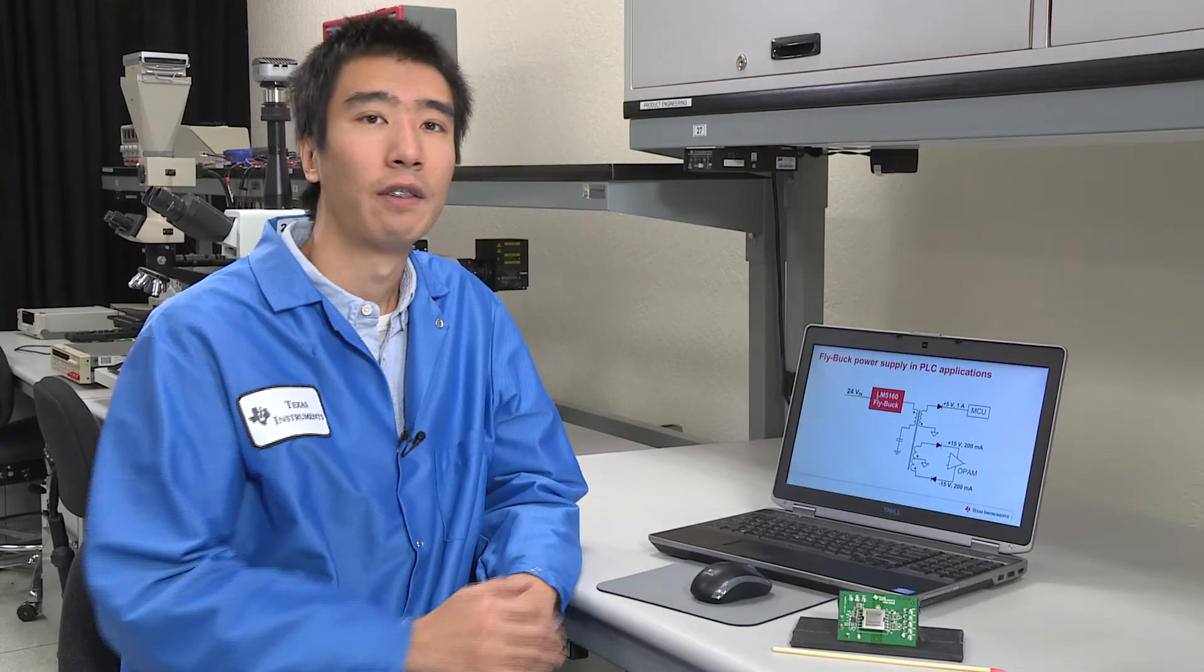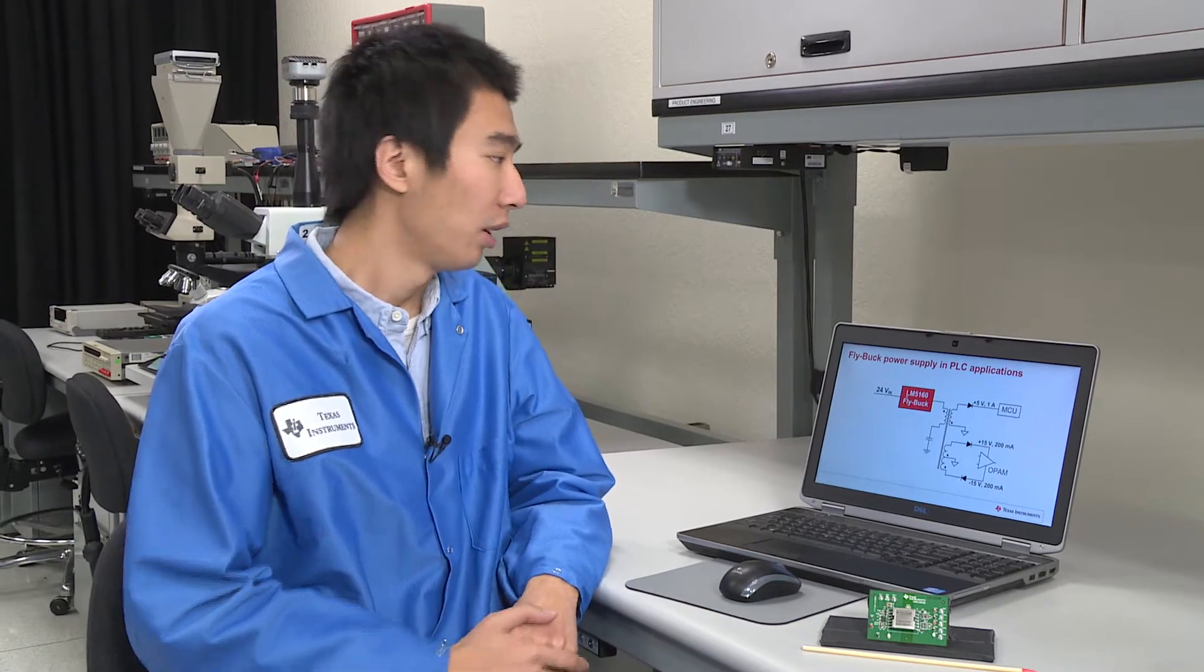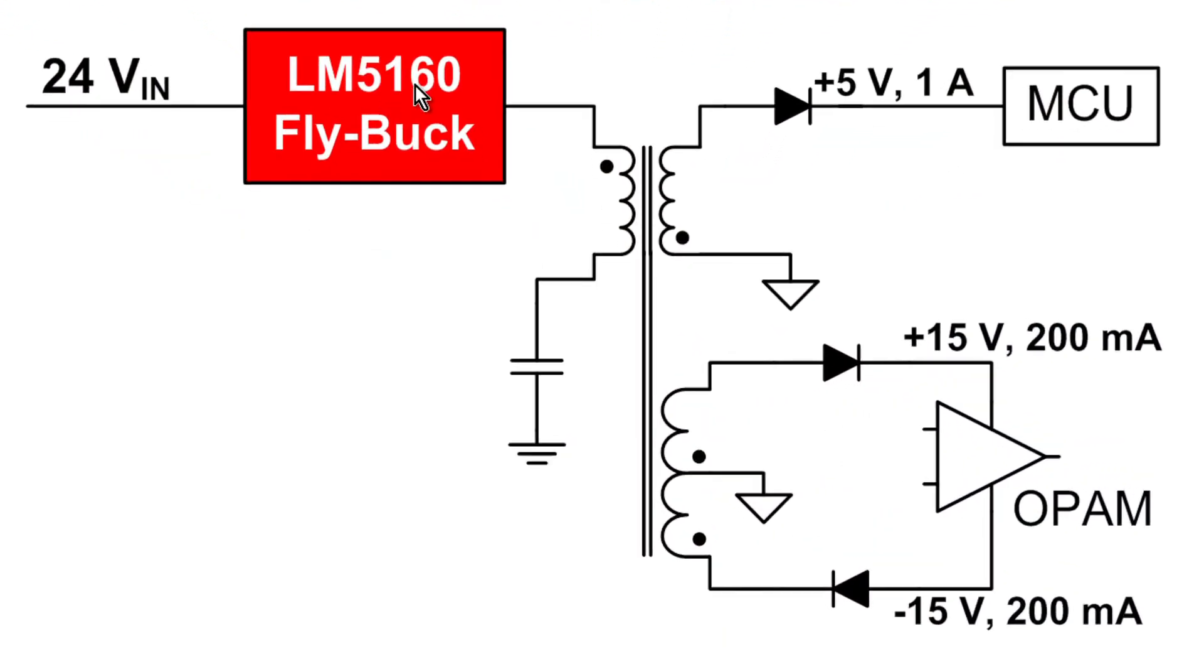Now let me give you a design example of the flyback power supply in PLC applications. For this case, we want to use the LM5160 flyback to create three isolated outputs. For the PLC application, you usually have a 24 volt DC VIN from the backplane power supply.